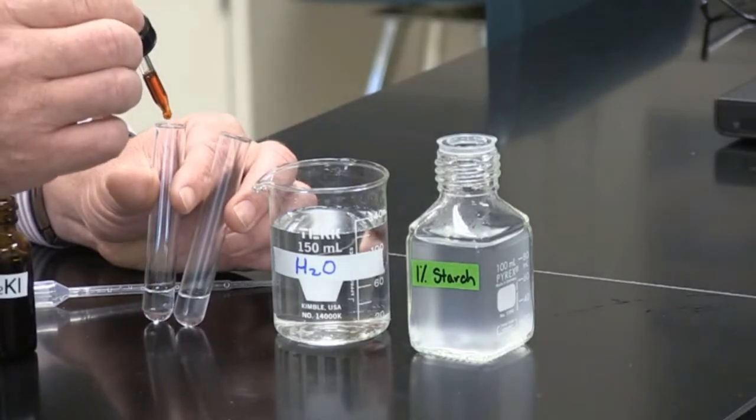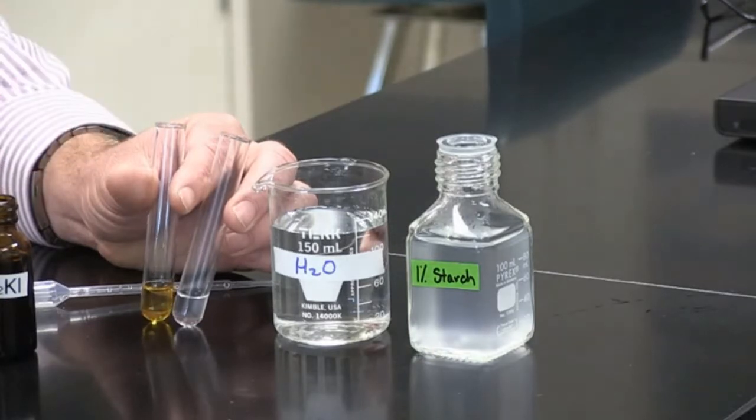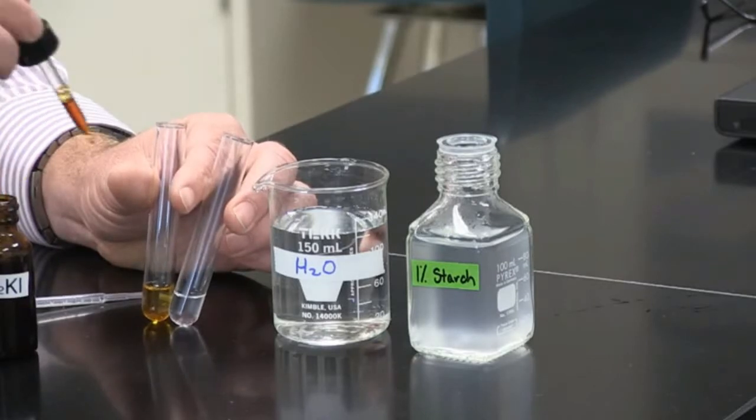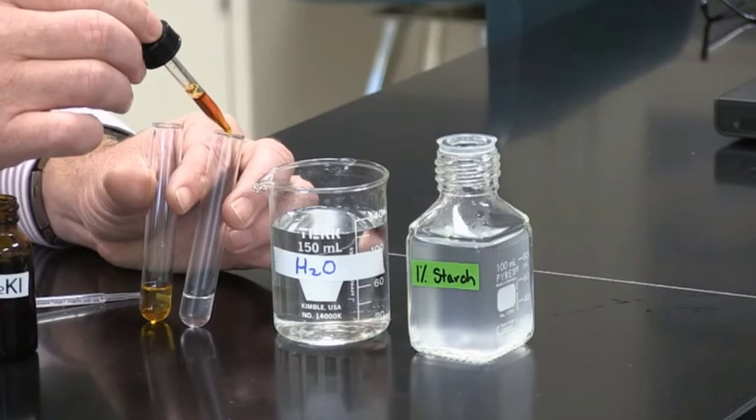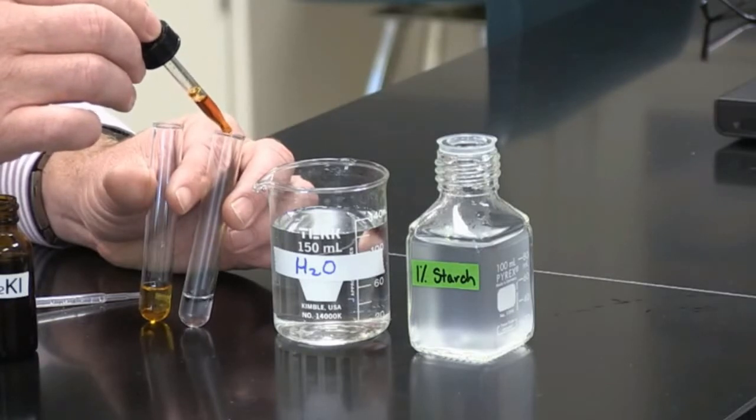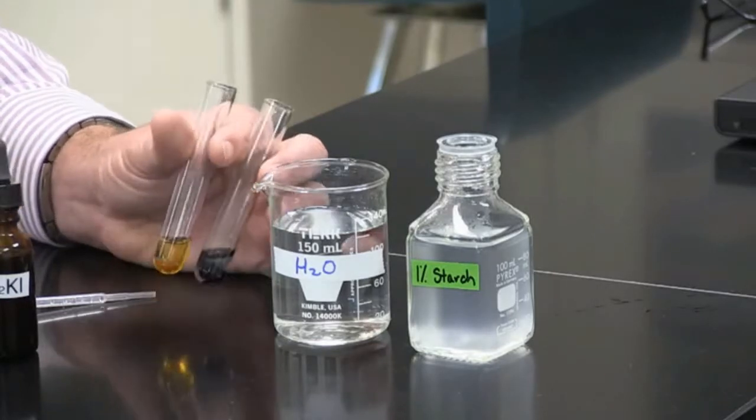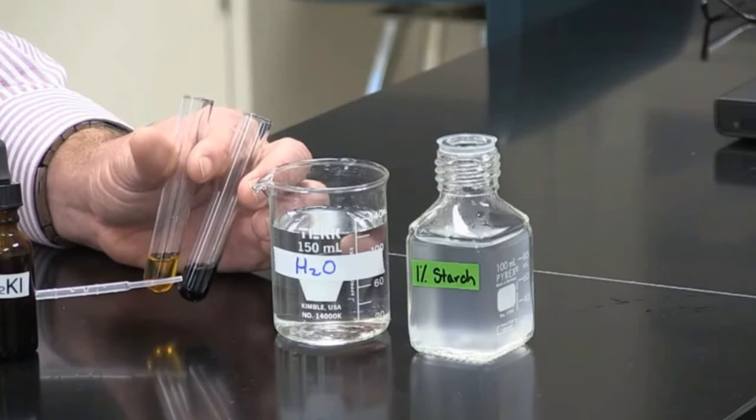So when I put two drops of the indicator in the water, you see that it stays the same amber color as the IKI solution. But when I put drops in the starch container, you see that we get a completely new color. Now we have a dark blue or black color.